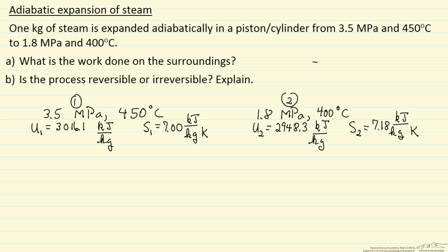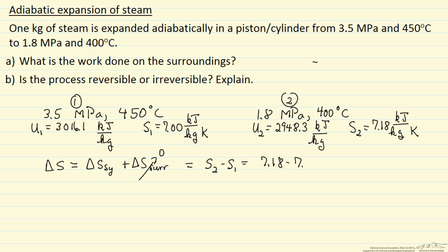I have indicated the initial and final conditions as condition 1 and condition 2. We can answer the second question first by looking at delta S for this process, which is delta S of the system plus delta S of the surroundings. The process is adiabatic, so there is no heat transfer to the surroundings, so that term is zero. Delta S total is just delta S for the system, which for one kilogram is S2 minus S1, so this is 7.18 minus 7.00, or 0.18 kilojoules per kilogram per kelvin.